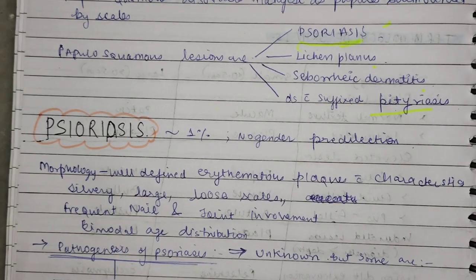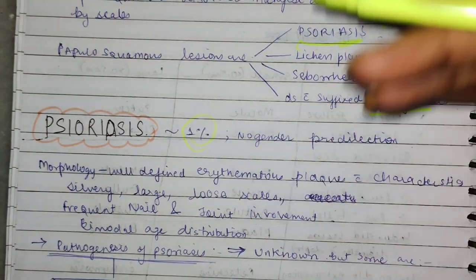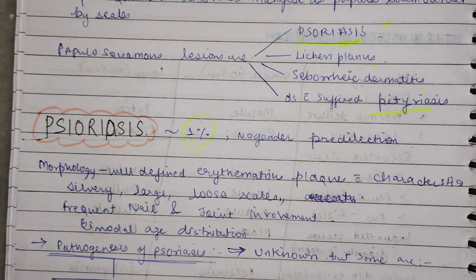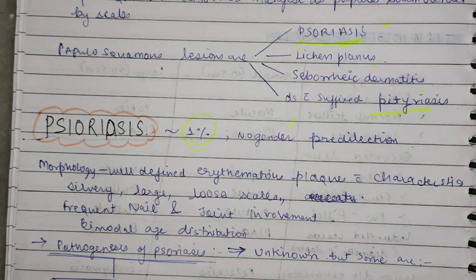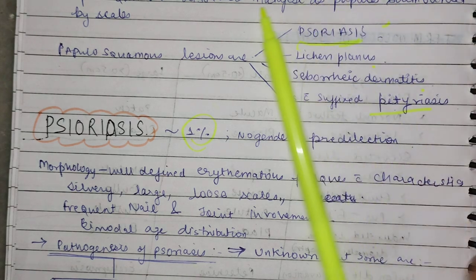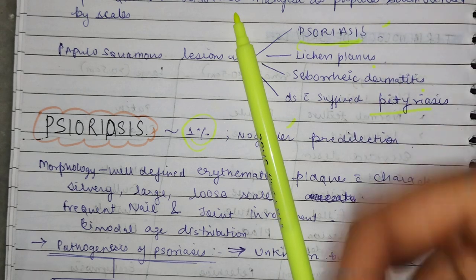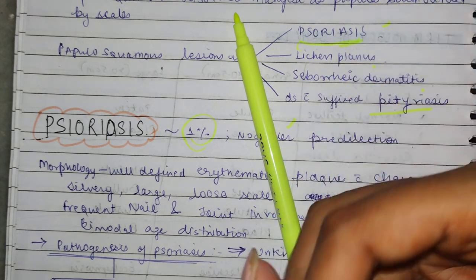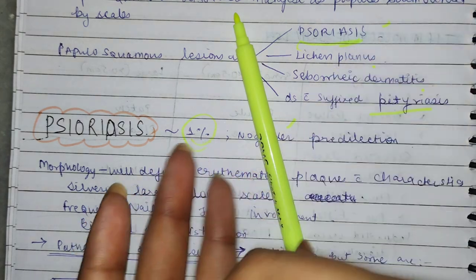Psoriasis is very common, affecting about 1% of the population. There is no gender predilection — males and females are equally affected. To understand morphology is very important because we will identify it from that.